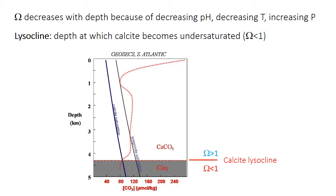Saturation state omega decreases with depth, especially because of the effects of decreasing pH, but also due to decreasing temperature in deeper waters and increasing pressure. So there is a depth in the ocean, typically around 4 to 5 kilometers today, where the carbonate ion concentration — the dashed red line in the graph — becomes lower than the saturation state, the vertical blue lines. At around 4.3 kilometers in this graph, the carbonate concentration is less than the calcite saturation, so omega is less than 1 and carbonate is undersaturated. This depth, or layer positioned in the ocean, is called the lysocline.